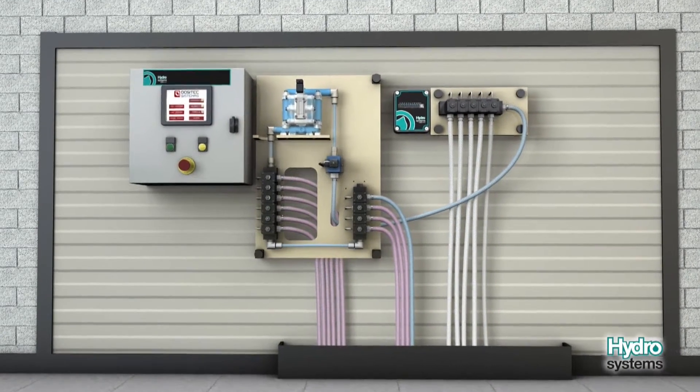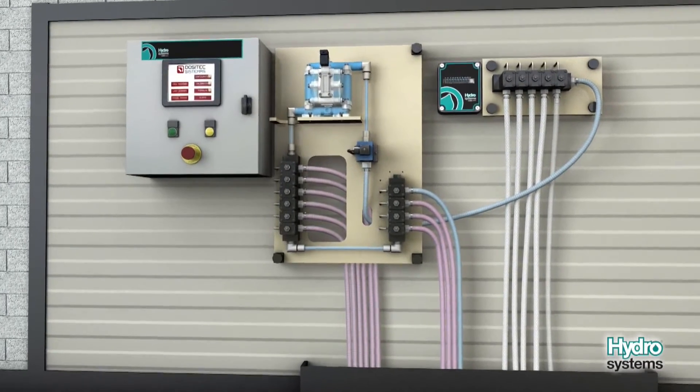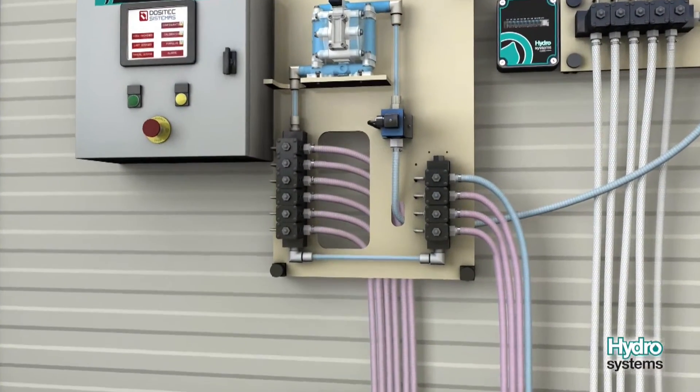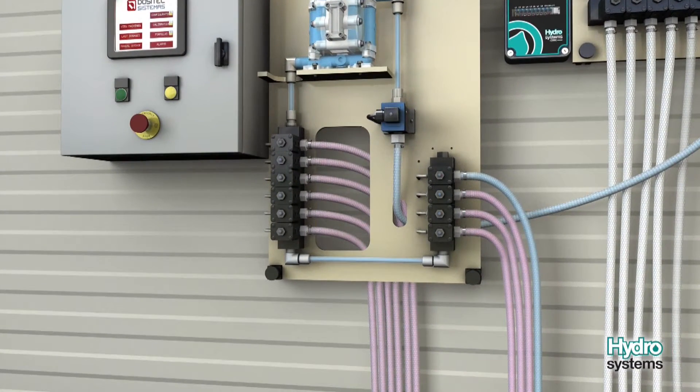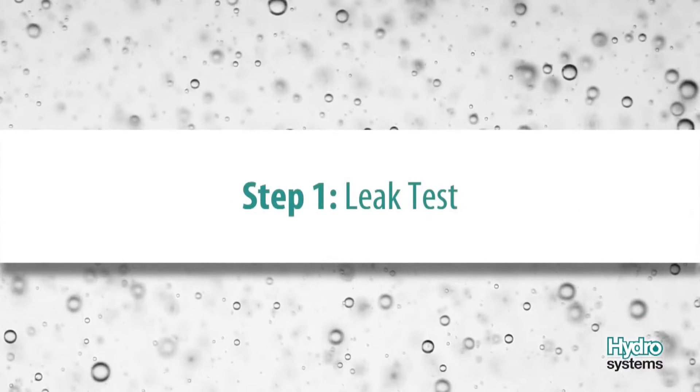Let's take a look at the dosing sequence for a Spectrum multi-washer dosing system from Hydro Systems Company. Step 1: Leak Test.